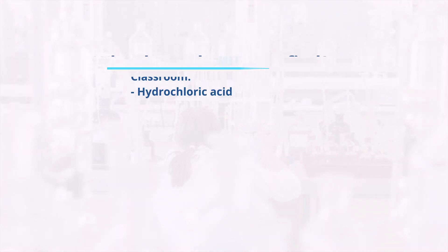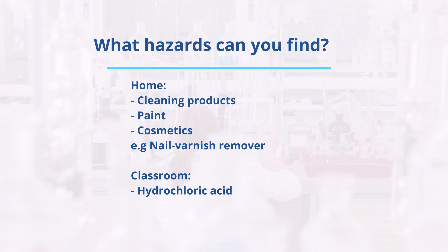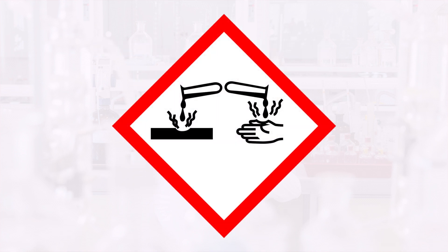Have a look around your science lab and see what hazards you can see. If you're at home, you can look at labels of cleaning products, paint, or cosmetics — for example, nail varnish remover — you may find a hazardous symbol there. One common one you may see in your science lab is hydrochloric acid. This one will have a hazard symbol to show that it's corrosive. You can record all of these findings in our chemical and hazards table that you can find at the link below.